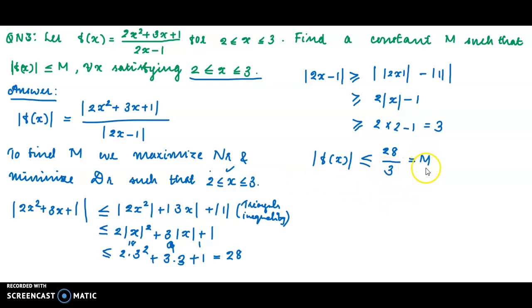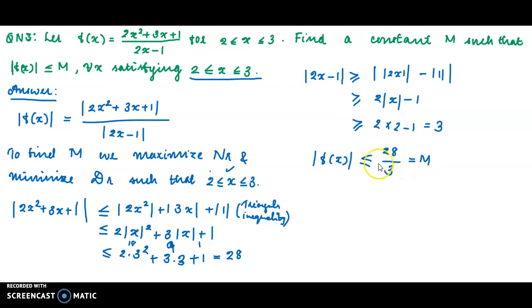Therefore, modulus of f of x is less than or equal to 28 by 3. We need to find a constant m such that modulus of f of x is less than or equal to m. So m equals 28 by 3. Since 28 by 3 is approximately 9.3, this means modulus of f of x is less than or equal to 10, or 11, or 12.3, etc.